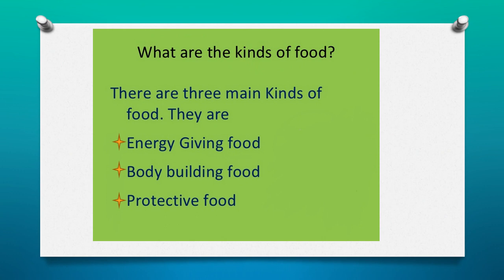Now let us see what are the kinds of food. There are three main kinds of food: energy-giving food, body-building food, and protective food.